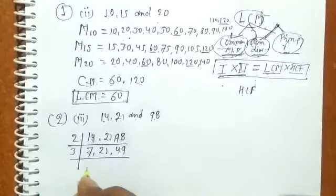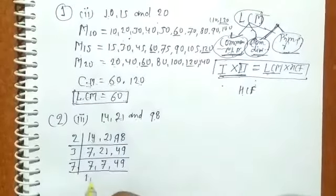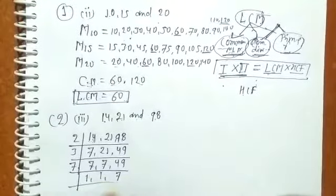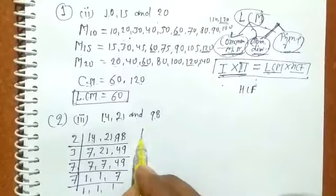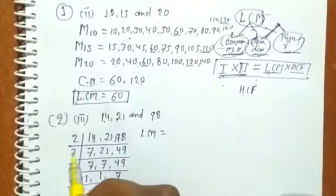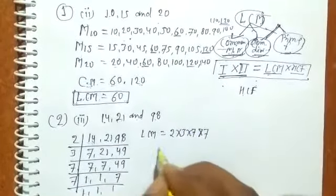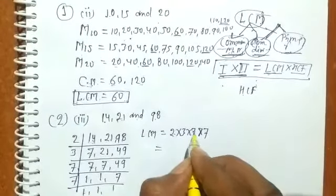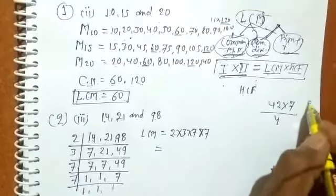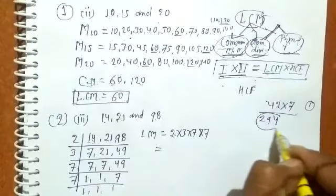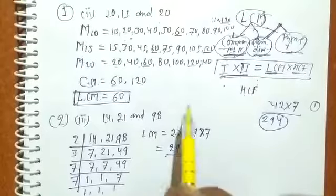Next, divide by 3: 21 ÷ 3 = 7, while 7 and 49 remain as they are. Now we have 7, 7, and 49. Divide by 7: 7 ÷ 7 = 1, 7 ÷ 7 = 1, 49 ÷ 7 = 7. Divide by 7 again: we get 1, 1, and 1. The LCM is the product of all divisors used: 2 × 3 × 7 × 7 = 294. So the LCM of 14, 21, and 98 using the common division method is 294.